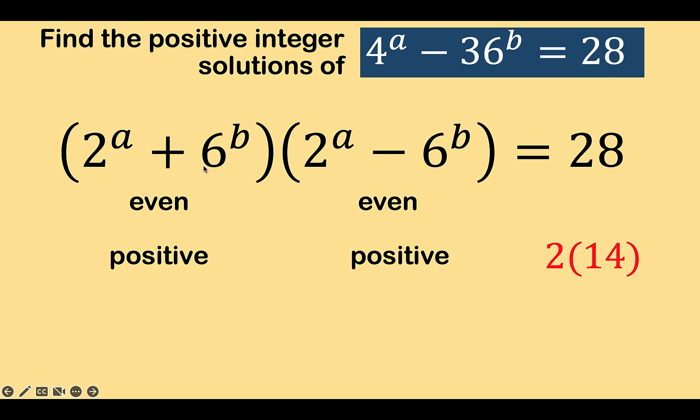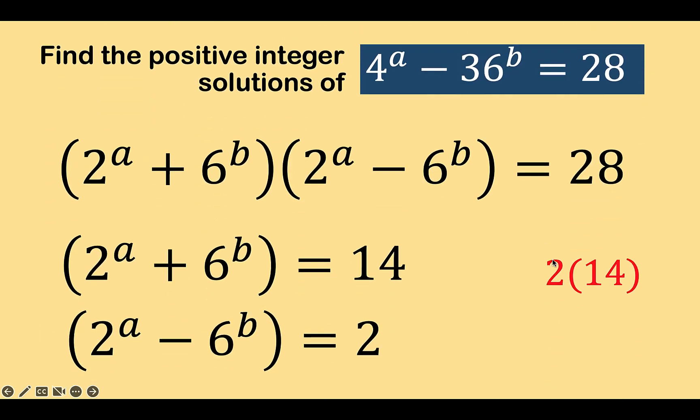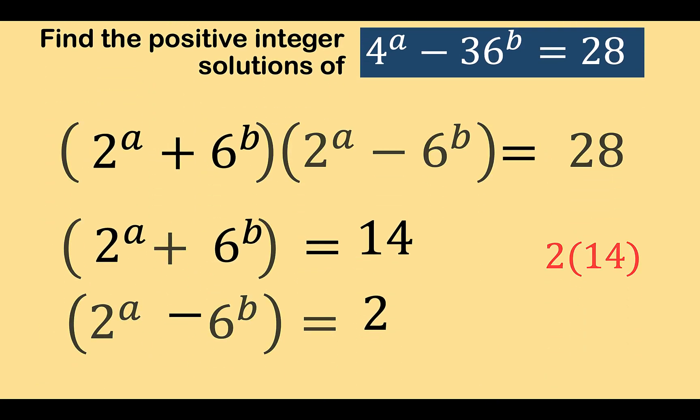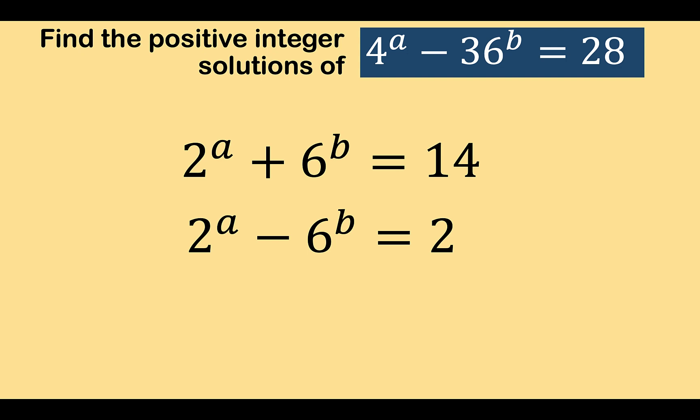And we said that the first factor here is greater than the second factor. So it is 2 raised to a plus 6 raised to b that is equal to 14, and 2 raised to a minus 6 raised to b is equal to 2. And so we now have this result. Now, we can solve these two equations simultaneously.